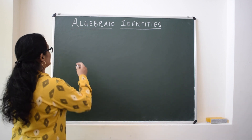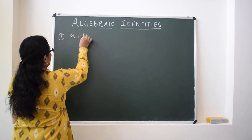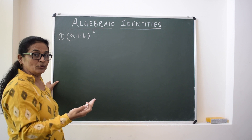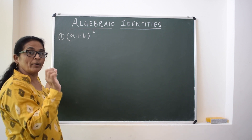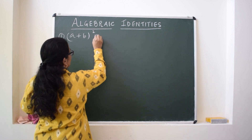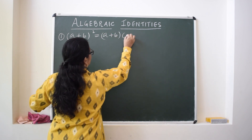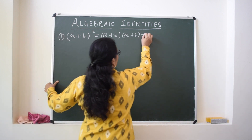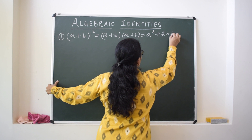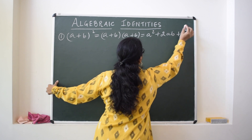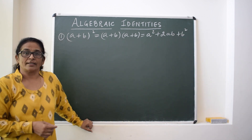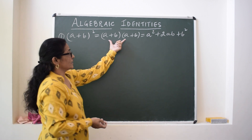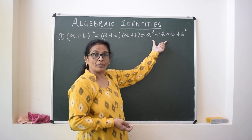The first identity is (a + b) whole square. If we square any number or value, it means that number is multiplied by itself twice. So this means (a + b) into (a + b), and its expansion will be a squared plus twice ab plus b squared. For any value given in this form, the expansion will be a² + 2ab + b².